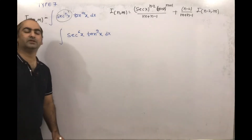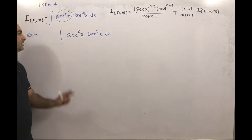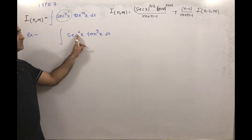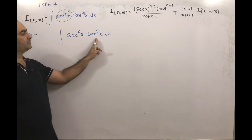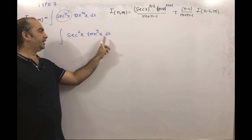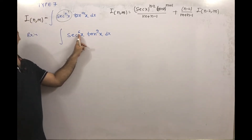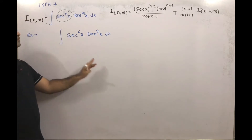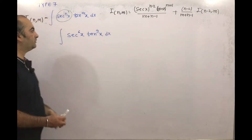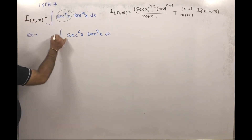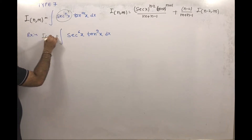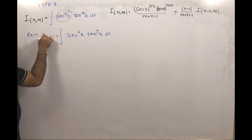Next we are taking an example: the integration of sec x to the power 6 into tan x to the power 9 dx. Here you can see sec x power is even, so we will follow this method. What we'll do is write this as I(6, 9).